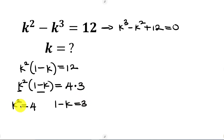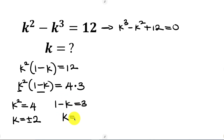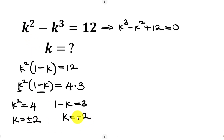Taking the square root of both sides gives k equal to plus or minus 2. From the other equation, moving k to the right and 3 to the left gives k equal to negative 2. Looking at the original expression, k must be negative, so the real value of k is negative 2. That means k plus 2 is a factor of this polynomial.